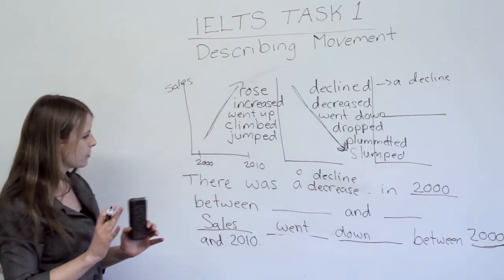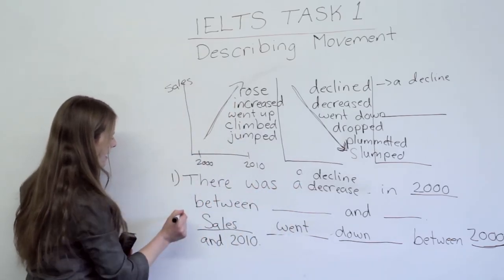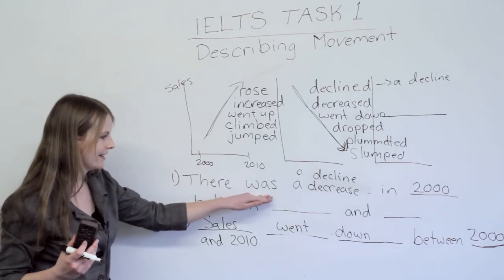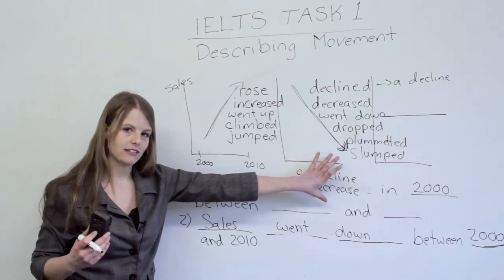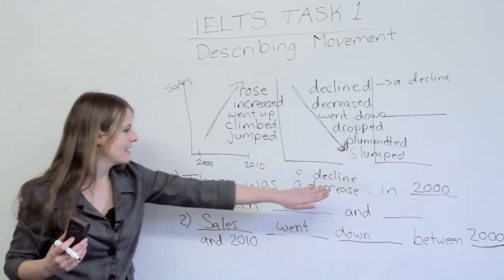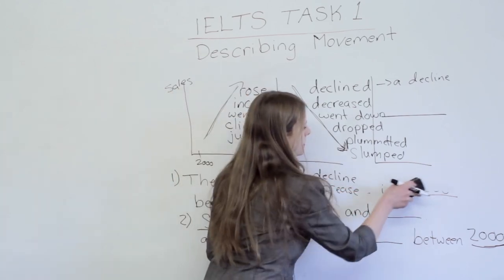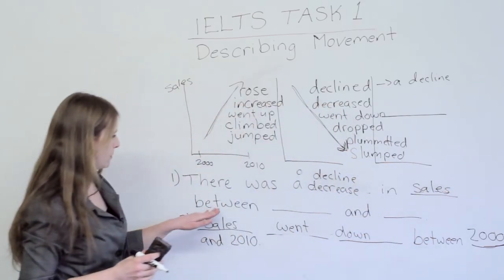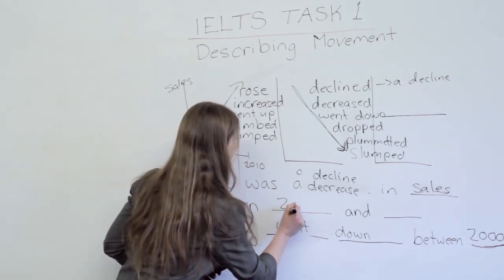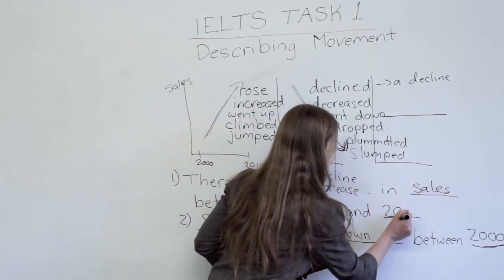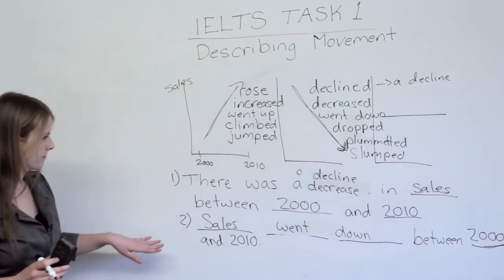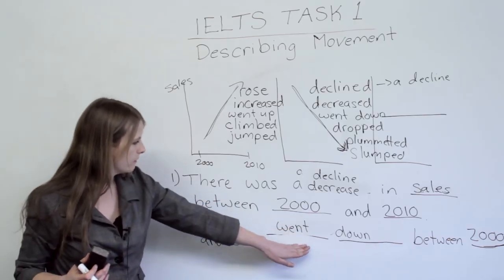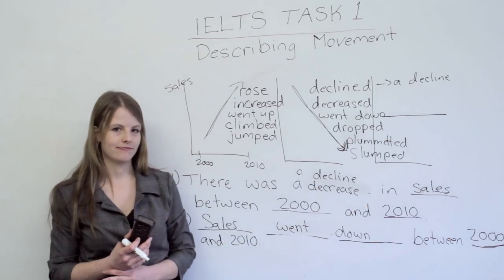It's important to note the difference between using the noun and verb form. When using the noun, you say: 'There was a decrease in sales between [date].' When using the verb form, you have the topic first — 'Sales' — then the verb — 'decreased' — then the date. Both structures work well, so choose which feels natural for your sentence.